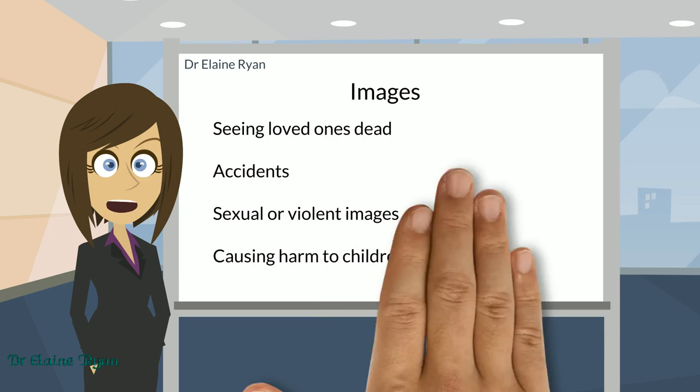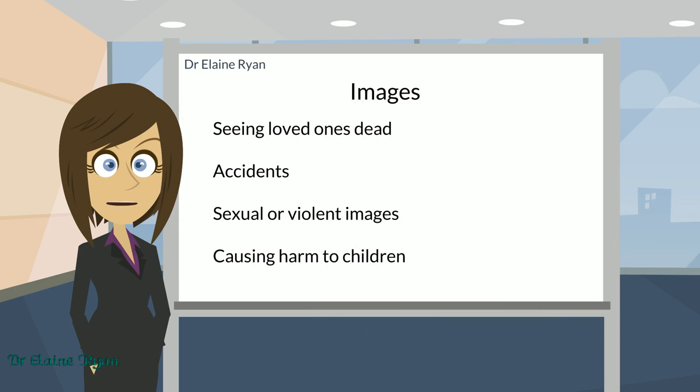The images can be very disturbing. You might see a loved one dead. You could have an image of an accident. They can be violent sexual images. They can be images that you're causing harm to children. And again, I'm not listing all the types of images that you can get in your head. I'm just giving a quick overview.